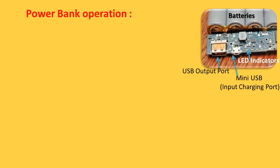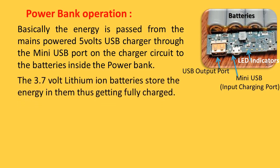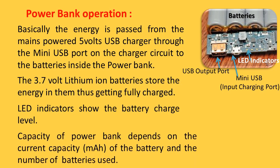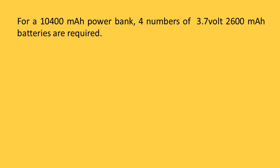Power bank operation: energy is passed from the mains 5-volt USB charger through the mini USB port on the charger circuit to the batteries inside the power bank. The 3.7-volt lithium-ion batteries store the energy, getting fully charged, and LED indicators show the battery charge level. The capacity of a power bank depends on the milliampere-hour rating of the battery and the number of batteries used — for a 10,400 mAh power bank, four 3.7-volt 2,600 mAh batteries are required.